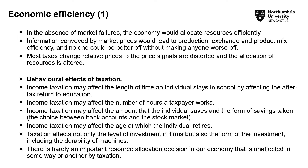In the absence of market failures, the economy would allocate resources efficiently. However, one problem is that taxes impact relative prices, and prices are a signal for the allocation of resources. When we institute a tax, we have a distortion — for example, you see a price of 600, and then you have to pay another 150 on top of that 600. The price gets distorted: you pay more than the value of the item because of a tax. Because price is a signaling mechanism directing resources to where it is profitable to produce, a distortion is introduced.